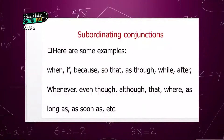You learned about subordinating conjunctions in SHS1 — let me review them with you. Here are some examples: 'when,' 'if,' 'because,' 'so that,' 'as though,' 'while,' 'after,' 'even though,' 'though,' 'that,' 'where,' 'as long as,' 'as soon as.' When you see these structures coming before a group of words with a subject and predicate, you refer to that group as a clause which cannot stand alone.